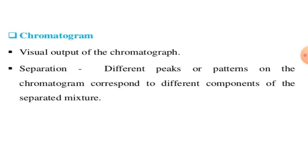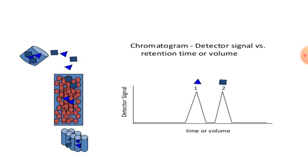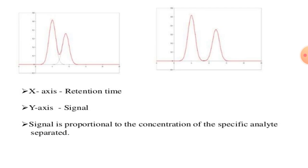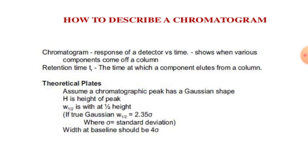A chromatogram is the visual output of the chromatograph. The separation appears as different peaks or patterns on the chromatogram, corresponding to different components of the separated mixture. On the chromatogram, the x-axis shows retention time or volume, and the y-axis shows signal, which is proportional to the concentration of the specific analyte separated.